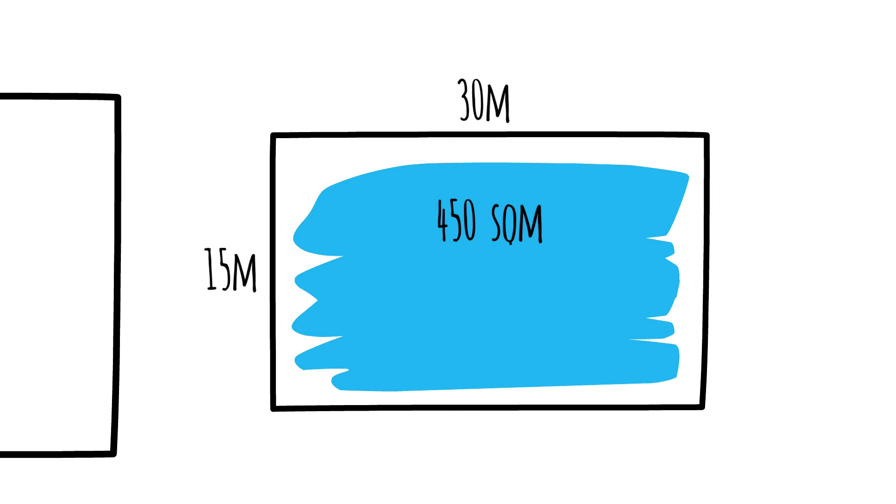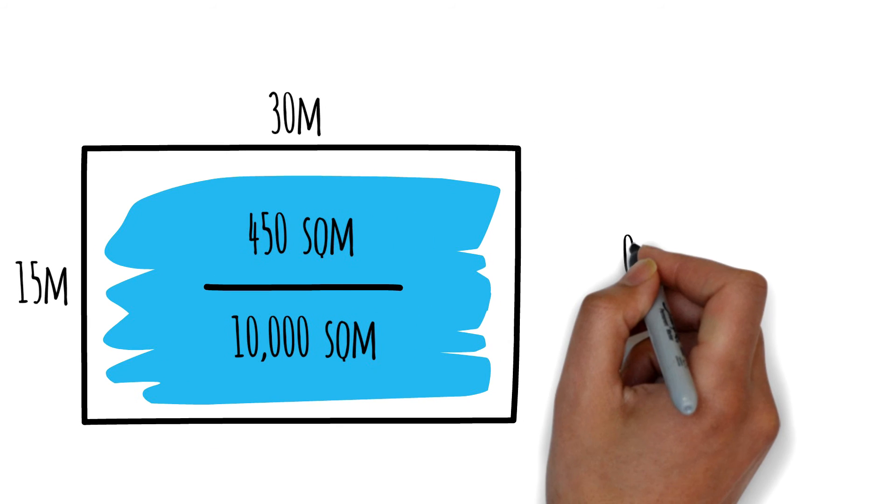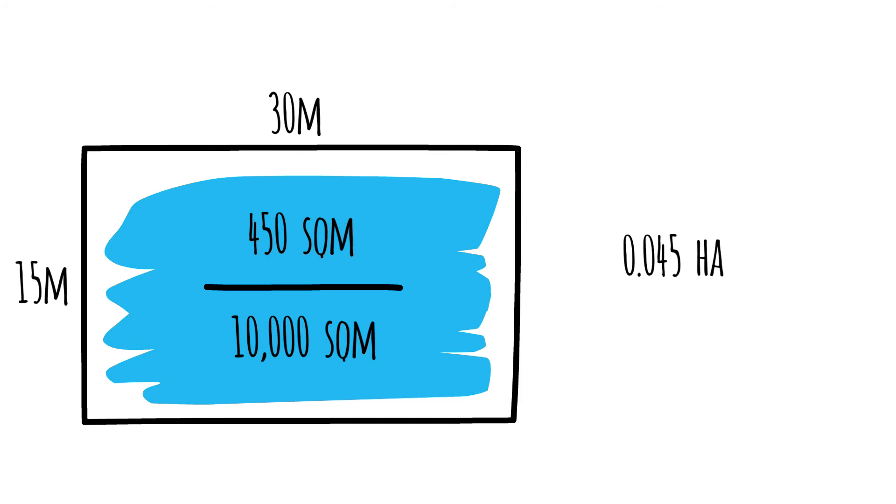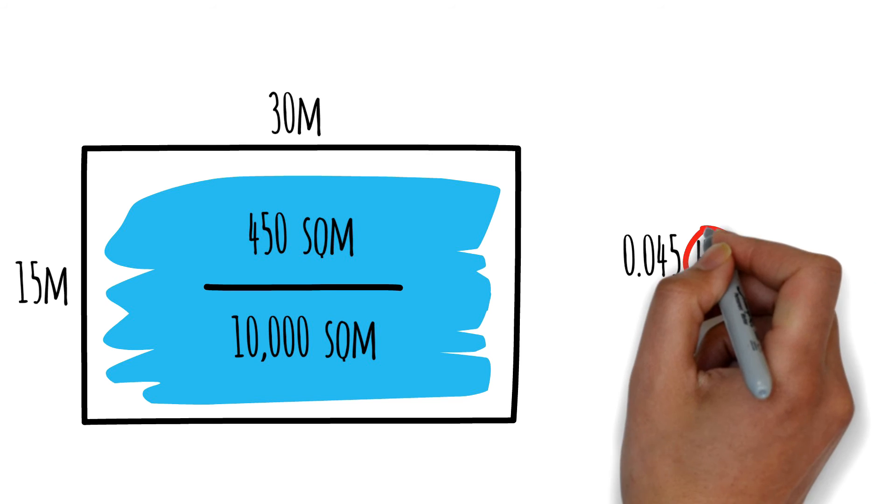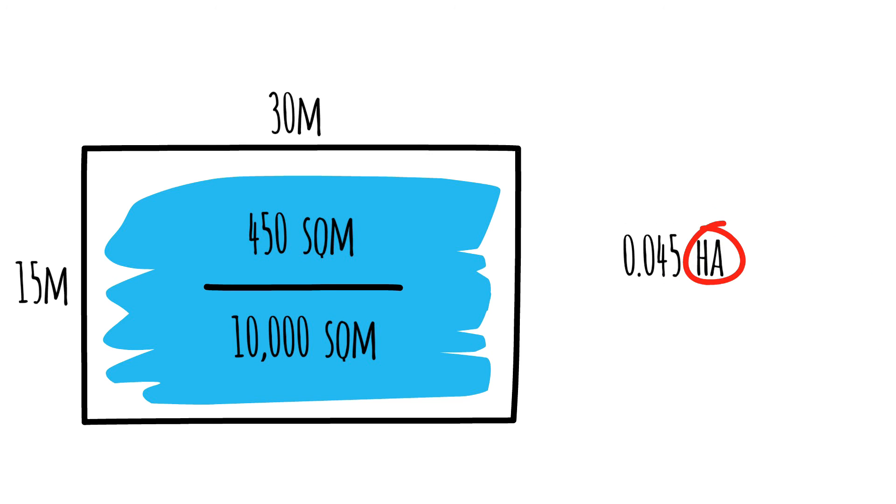So what's the size of this plot in hectares? It's simple. You divide it by 10,000. So it becomes a 0.045 hectare plot. Ha is the symbol used to represent hectares.